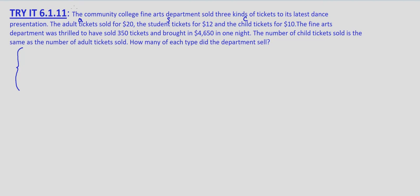Based on the given information — adult tickets sold for twenty dollars, student tickets for twelve, and child tickets for ten — and they sold three hundred fifty tickets total. So we know that A plus S plus C equals 350: the number of adult tickets plus the number of student tickets plus the number of children's tickets equals 350. We also know that they brought in four thousand six hundred fifty dollars in one night, so 20A plus 12S plus 10C equals 4,650.